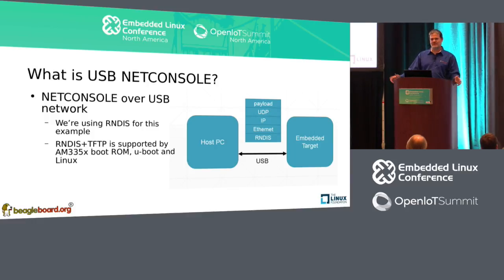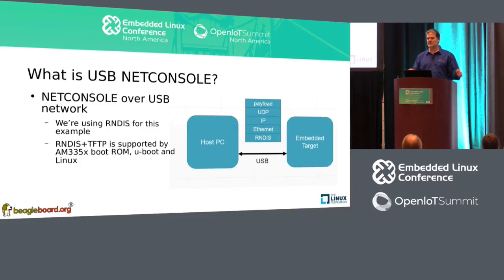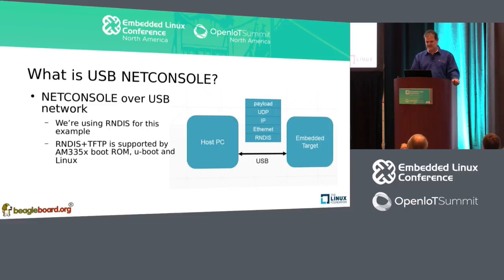U-boot really doesn't care what it's putting the console over — it needs UDP packets and that's all it needs. U-boot provides a service for doing networking. It plugs into that stack that does it over USB. So U-boot doesn't necessarily care if you're using Ethernet or USB Ethernet — at least at some level of abstraction. And Linux also understands how to do USB RNDIS and net console as well.